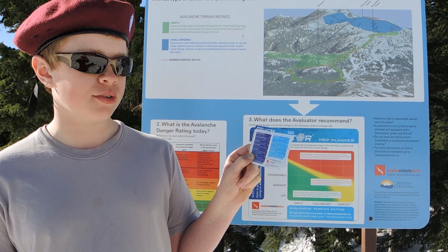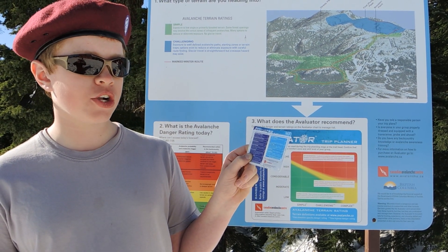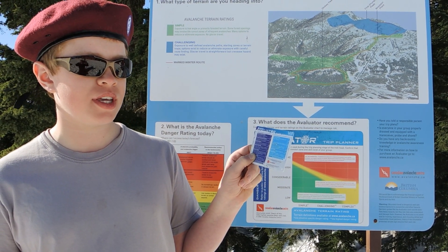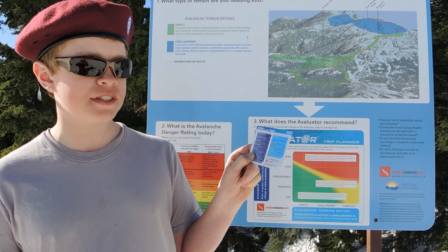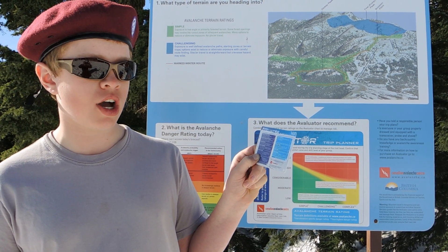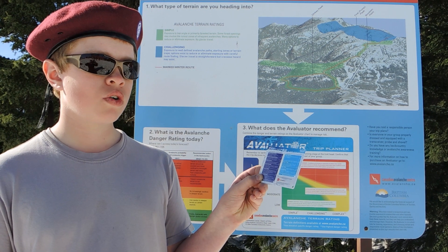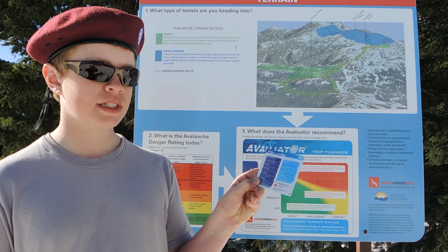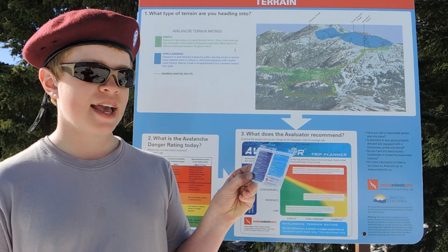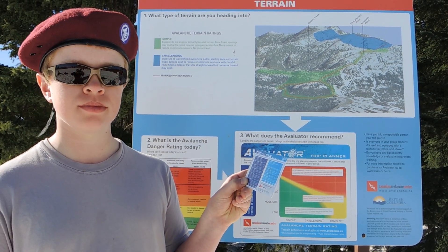Question number two: terrain traps — are there gullies, trees, or cliffs that increase the consequence of being caught in an avalanche? Question number three: slope shape — is the slope convex or unsupported?